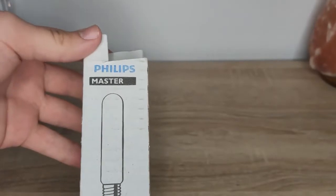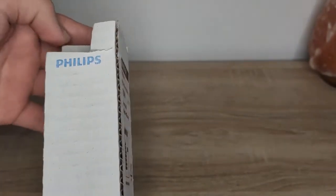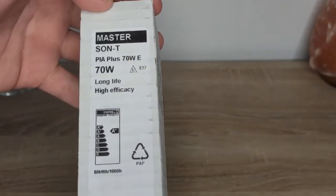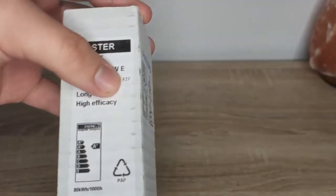Now, we have here the information that says, Philips Master, this is a little bit blank over here, and then we have Master 1T, PR+, 70W, E27 it says here.